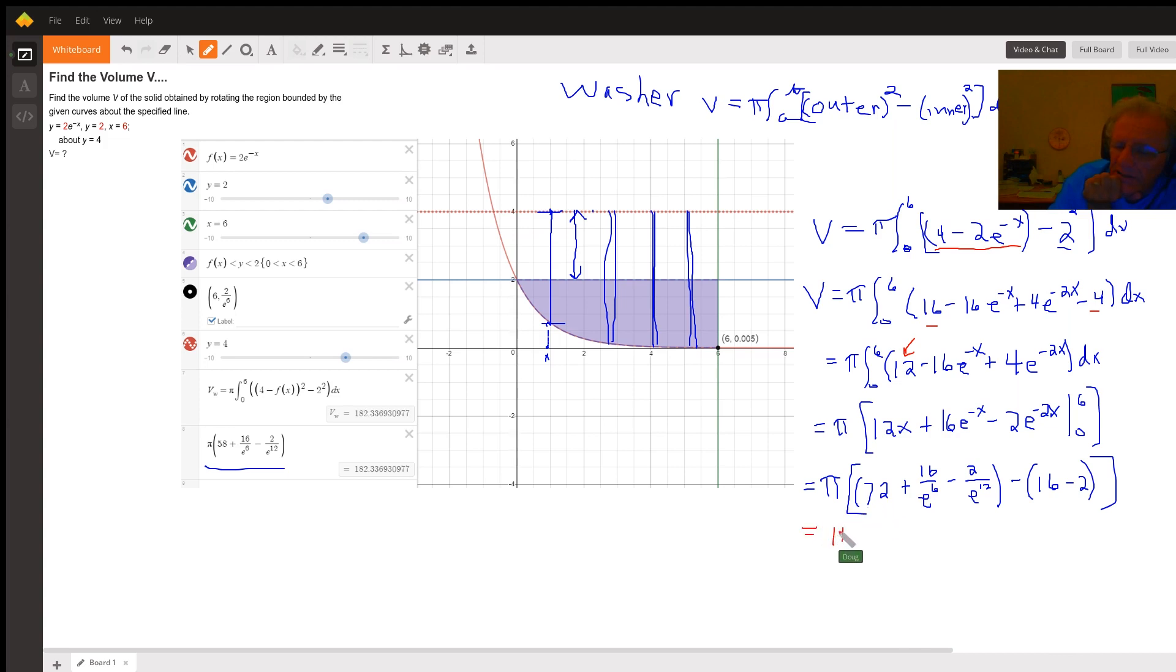Finally, I get pi times 58 plus 16 over e to the 6th minus 2 over e to the 12th. Now, of course, you could combine those all into one fraction.